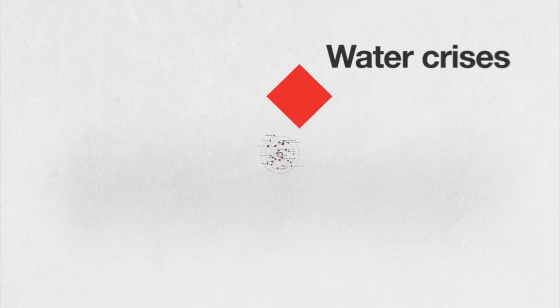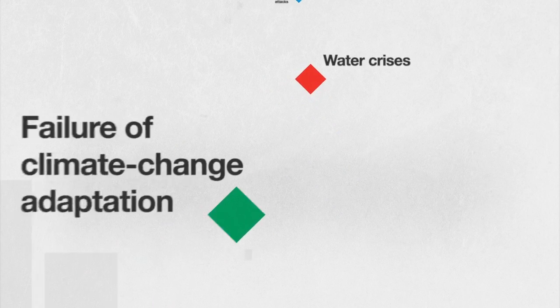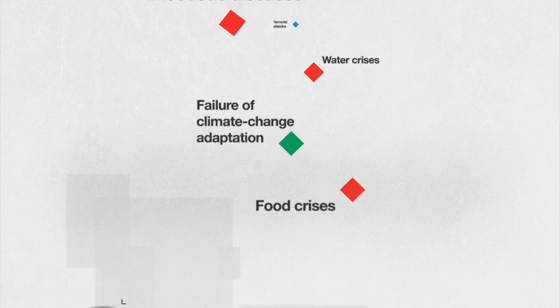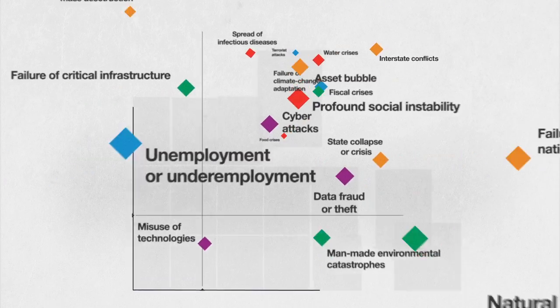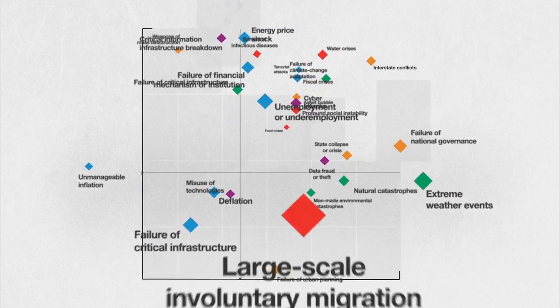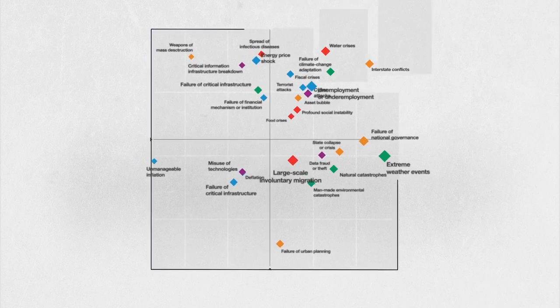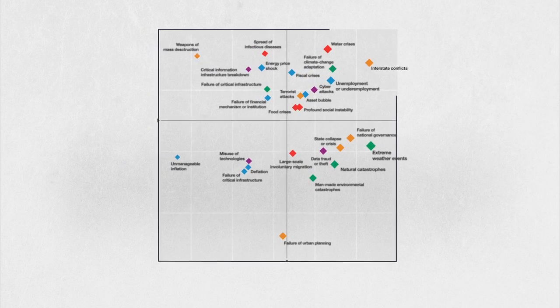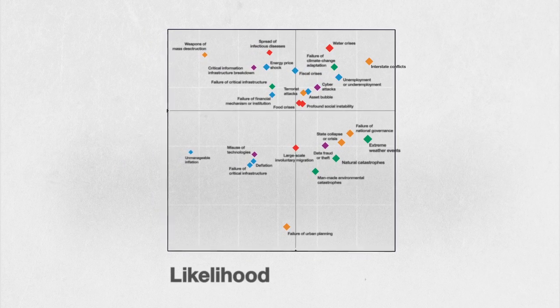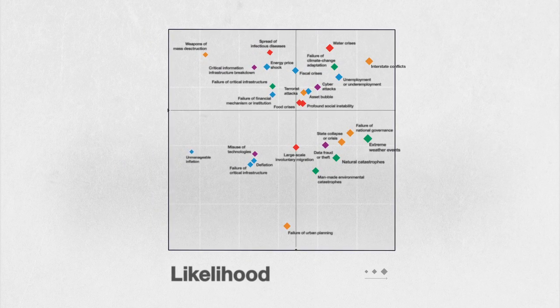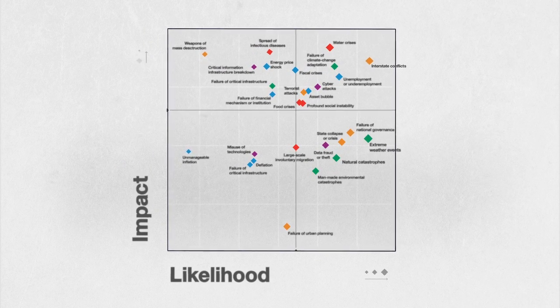Major water crises, failure of climate change adaptation, cyber risks, unemployment, and underemployment have all been flagged as high-level threats due to their likelihood and potential impact.